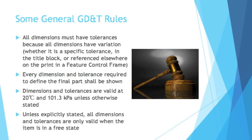Every dimension and tolerance required to define the final part shall be shown, so every dimension you need to understand the final part, you have to show it. Dimensions and tolerances are valid at 20 degrees Celsius and 101.3 kilopascals, unless otherwise stated — that's pretty much room temperature. It's just saying dimensions and tolerances are at this temperature unless otherwise stated.